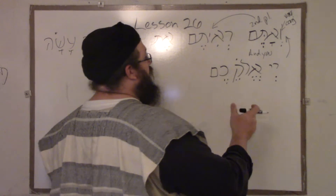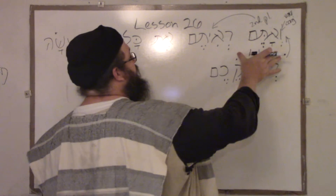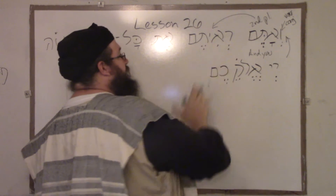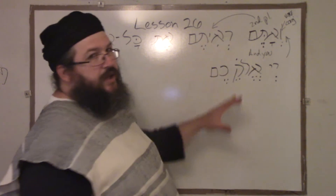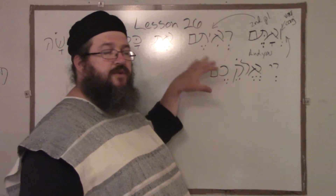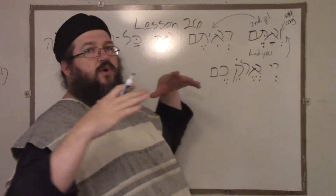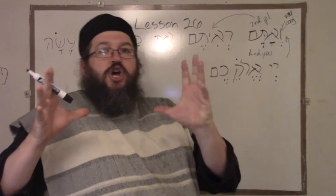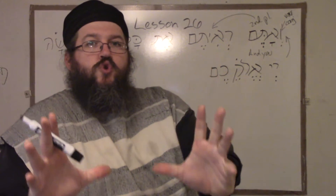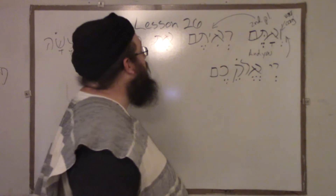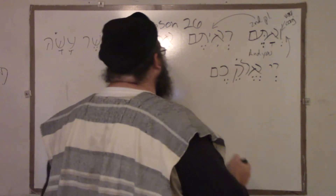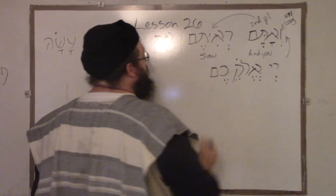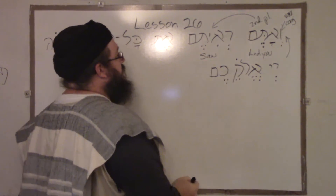Remember this rule: whenever you see this pronoun, and then you see the verb — so the pronoun is being used with the verb — it's only used for emphasis. It's wanting to emphasize 'you.' Ra'item — and we're just going to write this as 'saw.'